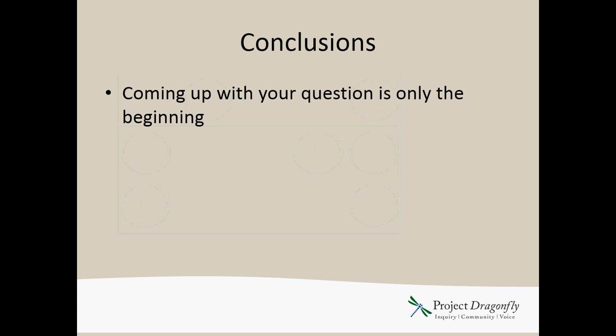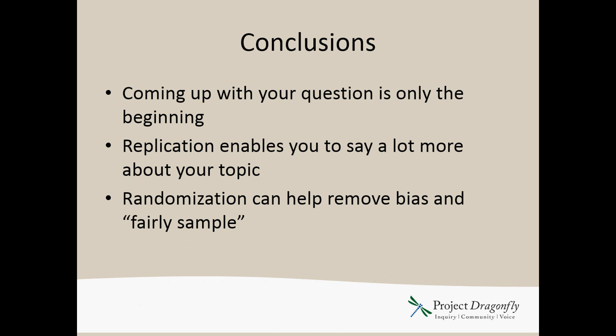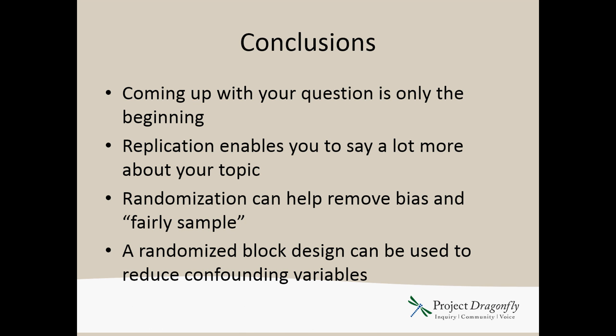So coming up with your question is only the beginning. The next step is thinking about how you can get at that question with a sound experimental design. Replication enables you to say a lot more about your topic because you can include variation and use statistical tests like t-tests to really look at the data. Randomization is really important — it helps remove bias so that you're not unconsciously going into a higher-diversity area or selecting higher-achieving students. Adding randomization helps you sample fairly and take your own judgment as an experimenter out of the equation. A randomized block design can be used to reduce the influence of confounding variables on your study. I hope this has been useful and we'll talk soon.